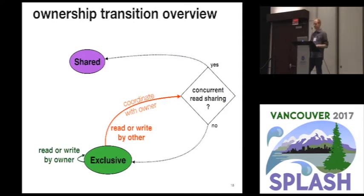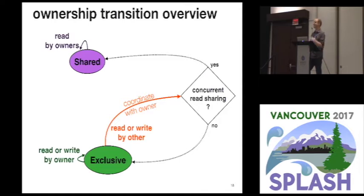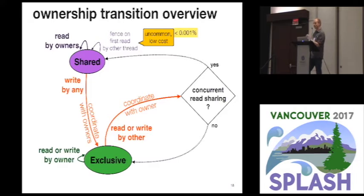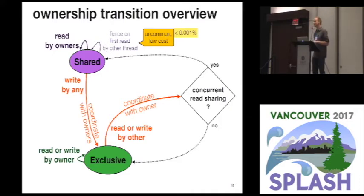Once we're in shared state, both threads have ownership and are allowed to do any analysis of read operations on this access history. However, if any thread needs to analyze a write operation, that's not permitted under this state, so a writing thread needs to coordinate with all owner threads in the shared ownership set to ensure a safe transition back to some exclusive state. There's one more case: if a thread not currently in the shared ownership set needs to analyze a read operation, we want to add it to the shared set, but to ensure that doesn't interact poorly with a potential concurrent write transition, we're going to need a memory fence in the implementation of that particular transition.